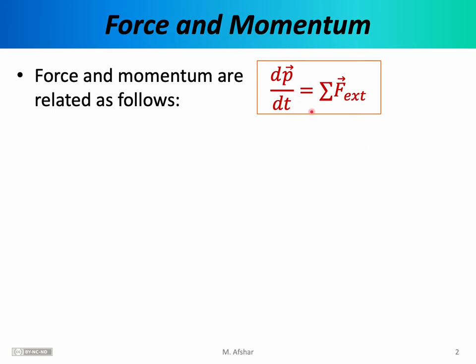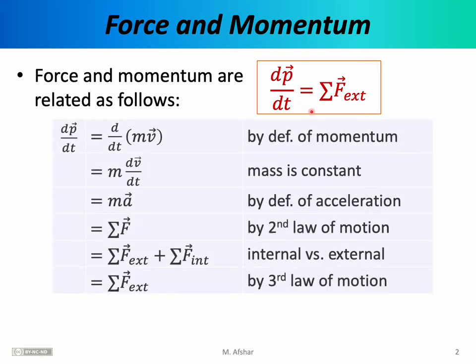This relationship is quite important, and so it's worth our time proving it. The proof proceeds as follows. We begin with the derivative of momentum with respect to time. We know that momentum is mass times velocity. We know that mass is constant, at least for the situations we consider in this class, so we can bring the mass outside of the derivative, and we end up with the derivative of v with respect to t. This derivative is equal to the acceleration of the system, so we can write this as mass times acceleration. Thanks to Newton's second law of motion, we know that mass times acceleration is equal to the net force acting on the system.